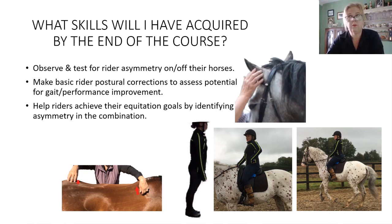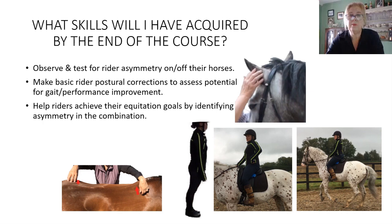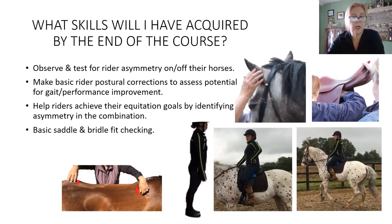Most riders are happy at that level and there's nothing wrong with that — I'm not saying we've got to make more Grand Prix riders — but most of them struggle even with preliminary and novice. I like to think there's a system whereby when the horse and rider have less asymmetry, they're both more stable and balanced, and their performance potential goes up exponentially.